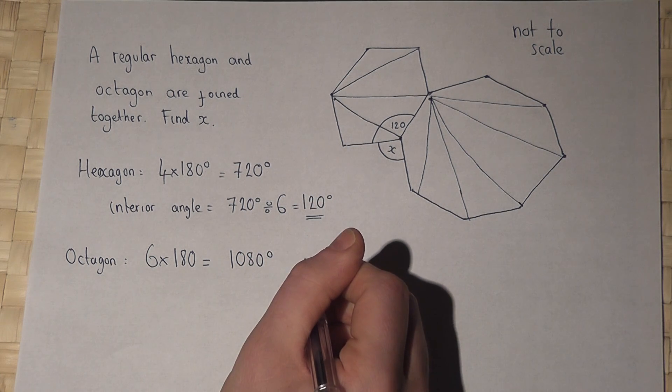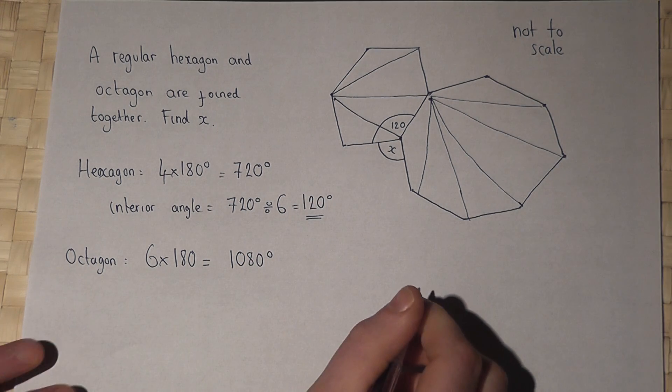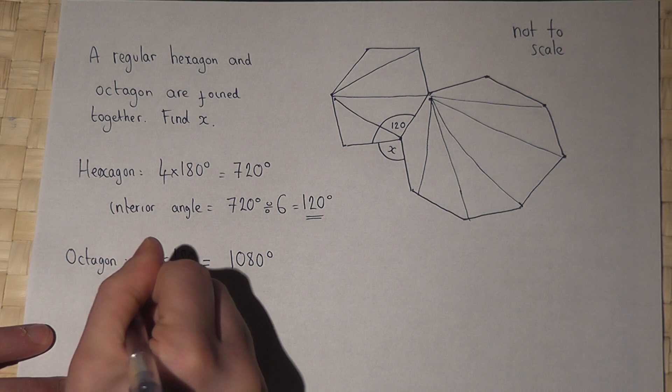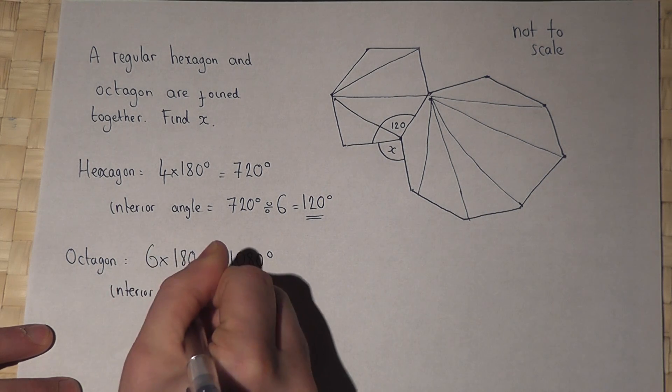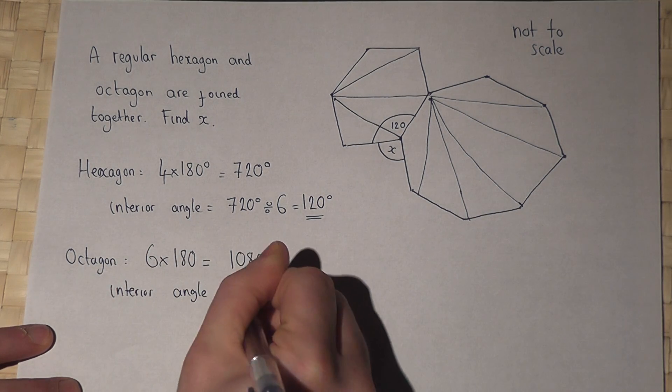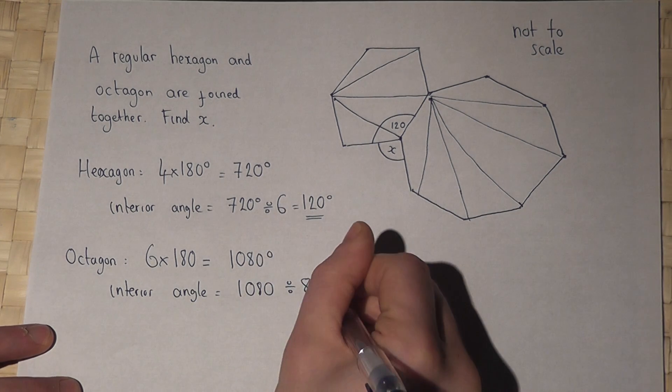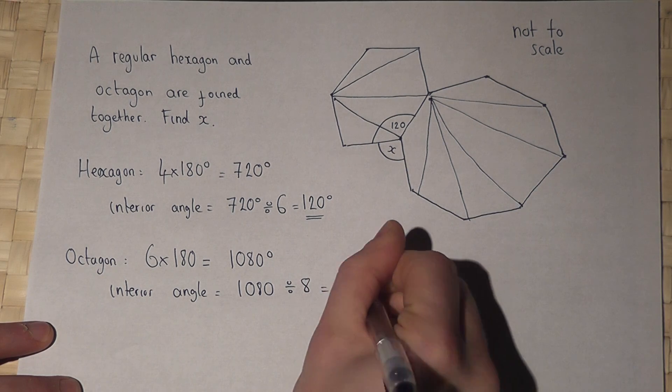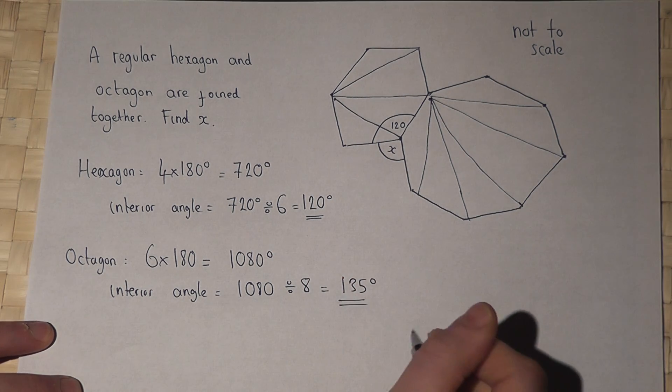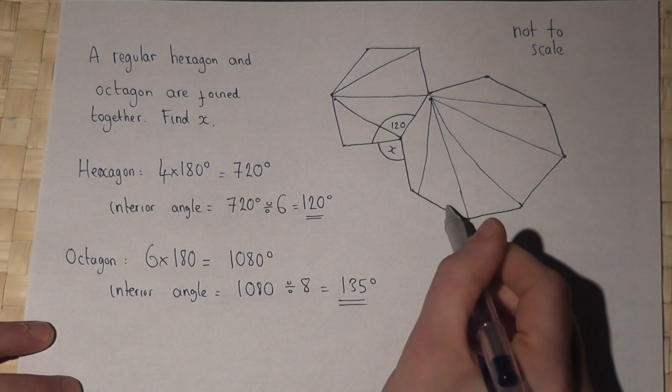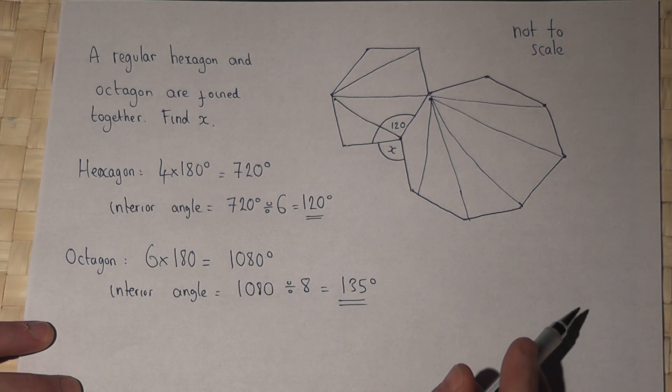So to find out what one of the angles is inside the octagon, I do 1080 divided by eight, which works out to be 135 degrees. So one of the interior angles is 135 degrees.